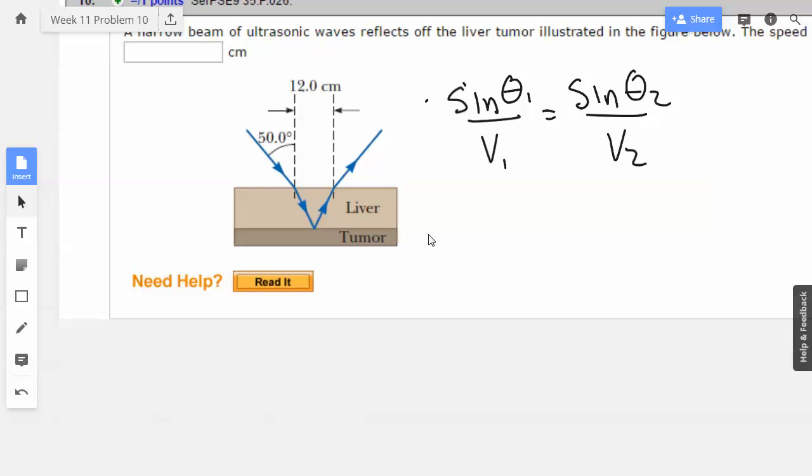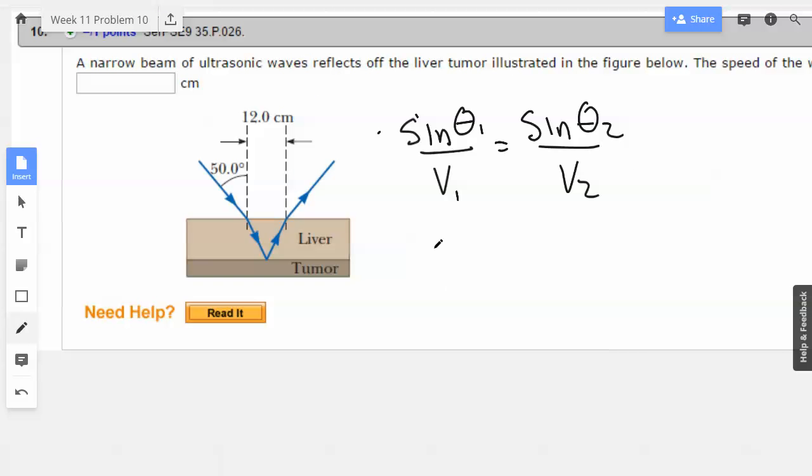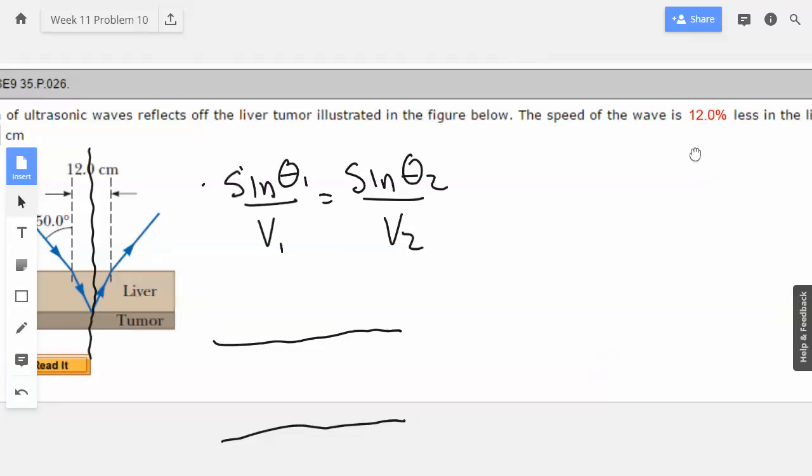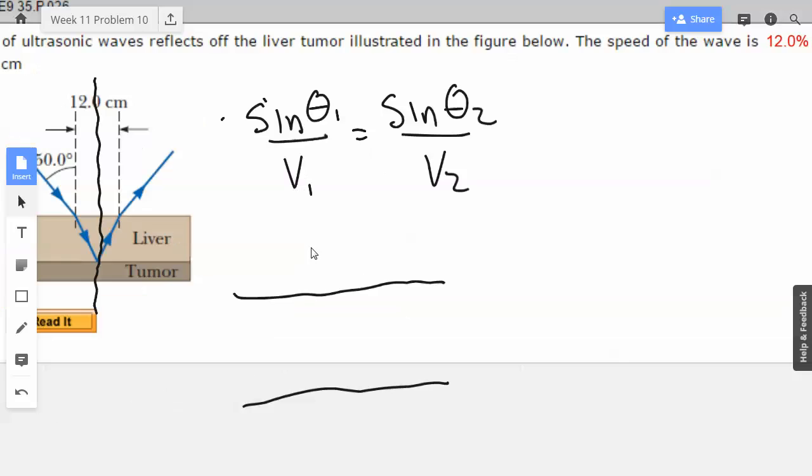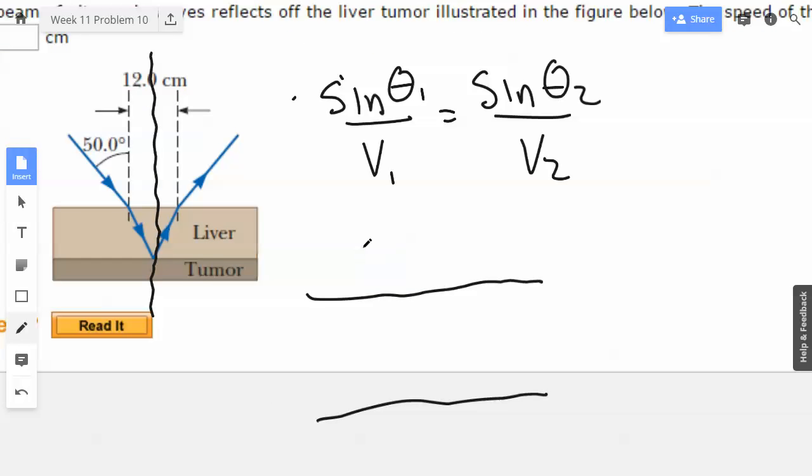We should probably at this point actually start defining things, like draw a picture and what theta 1 is and velocity 1. So I'm going to just draw this in half. We have the air and the tumor. The speed of the wave is 12% less in the liver than the surrounding medium. I'm going to say the surrounding medium is air, but it doesn't really matter.